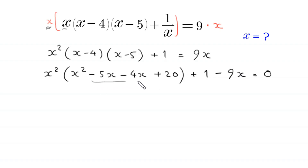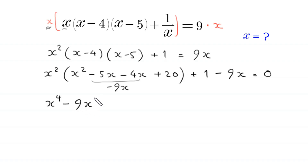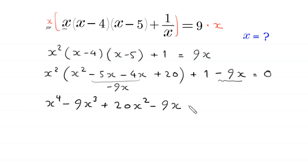Now negative 5x minus 4x becomes negative 9x. We multiply x squared by these three terms: x squared times x squared becomes x to the power 4, x squared times negative 9x gives negative 9x cubed, and x squared times 20 gives plus 20x squared. From these two terms we write negative 9 times x plus 1, equal to 0.